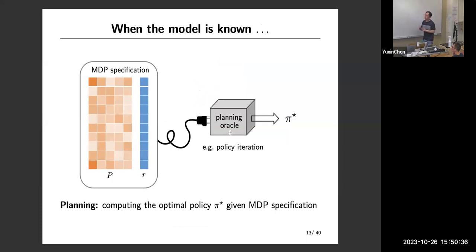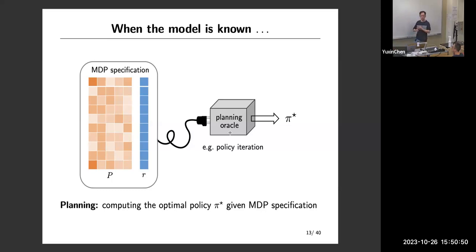If the model is known — meaning P the transition kernel and the reward function are known to you — then the problem is not difficult. You can use Dimitri Bertsekas's book, which tells you how to use dynamic programming to solve it. This can be solved tractably within polynomial time, actually in a fast manner, for both finite and infinite horizon cases. So this problem is considered solved in those settings.